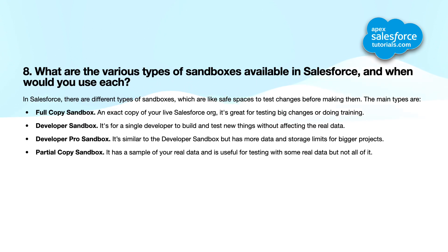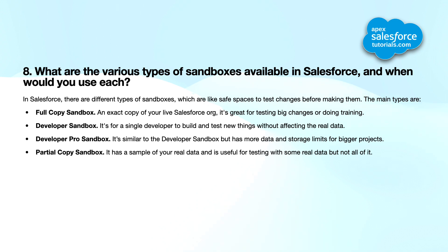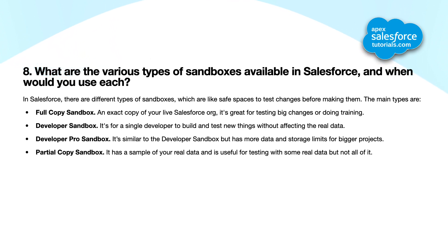Eighth question: what are the various types of sandboxes available in Salesforce and when would you use each? The main types are: Full Copy sandbox — an exact copy of your live Salesforce org, great for testing big changes or training. Developer sandbox — for a single developer to build and test without affecting real data. Developer Pro sandbox — similar to Developer, but with more data and storage for bigger projects. Partial Copy sandbox — has a sample of real data, useful for testing with some real data but not all.